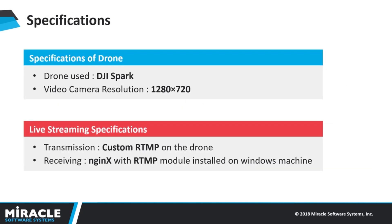Now, coming to the specifications and hardware requirements. We used the DJI Spark Drone to fly above the parking area and stream the live video over an RTMP network to a GPU-powered machine. The GPU-powered machine was configured with Nginx and an RTMP module to receive this live video stream. The GPU machine is a Windows machine with 16GB of RAM, an i7 processor, and an NVIDIA GTX 1080 GPU with 8GB of DDR5 video memory.